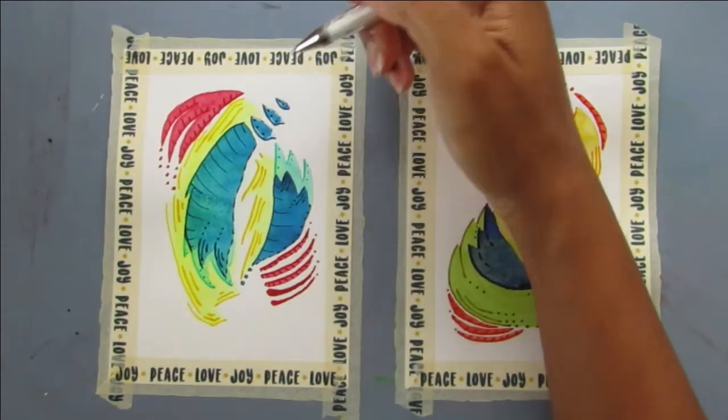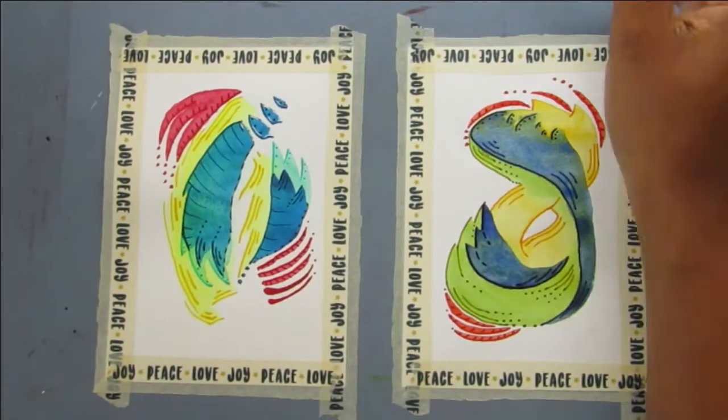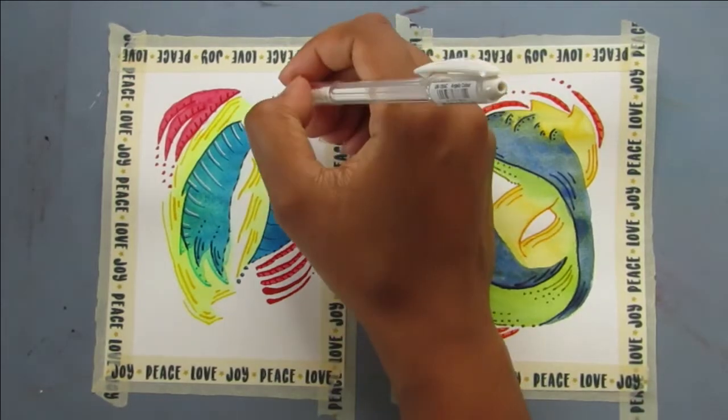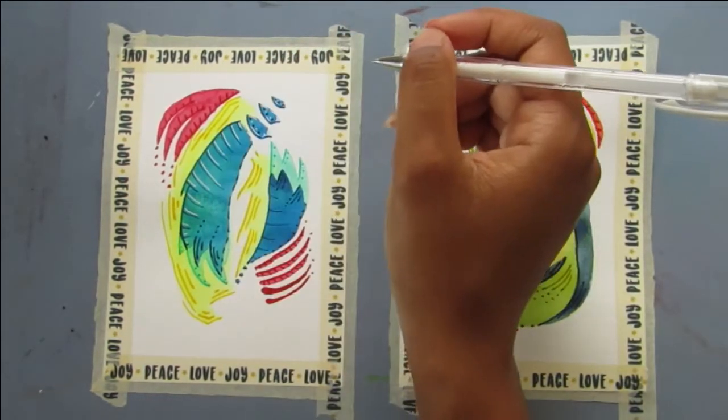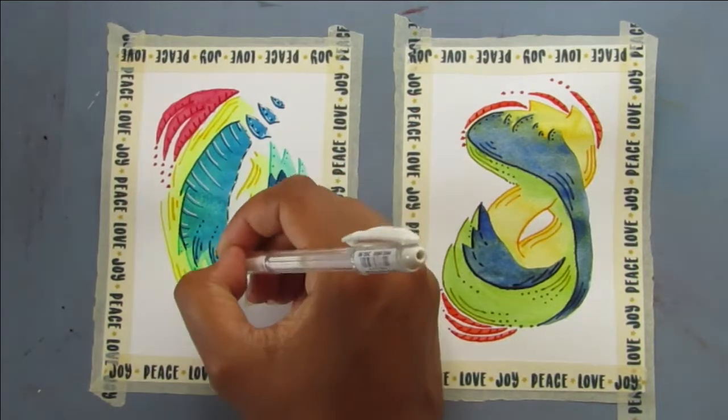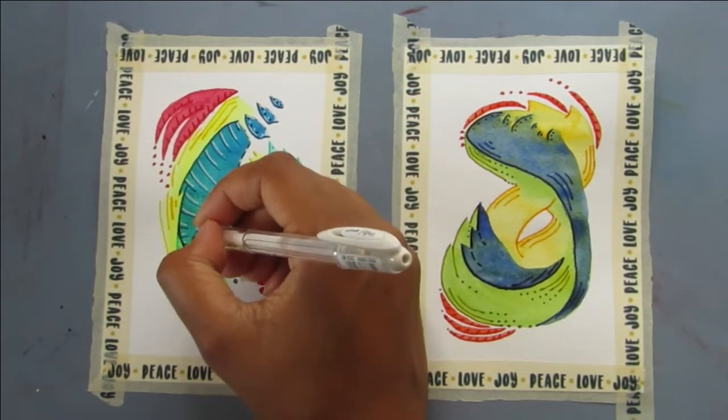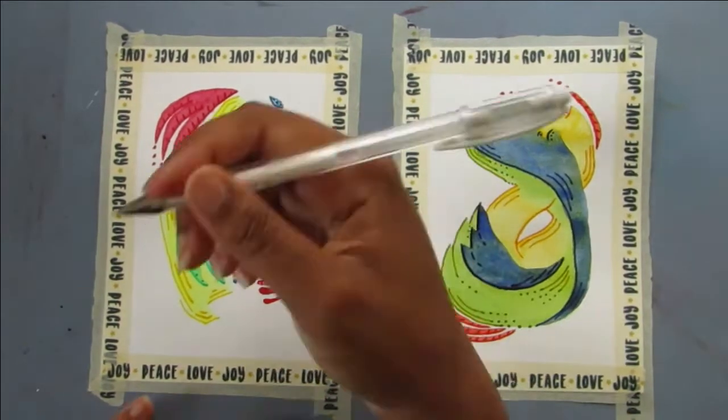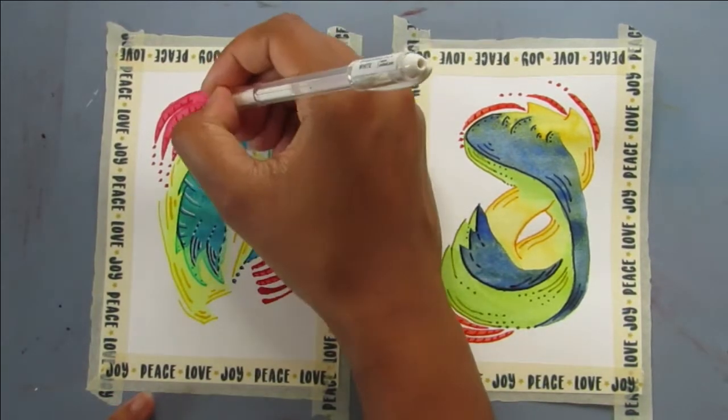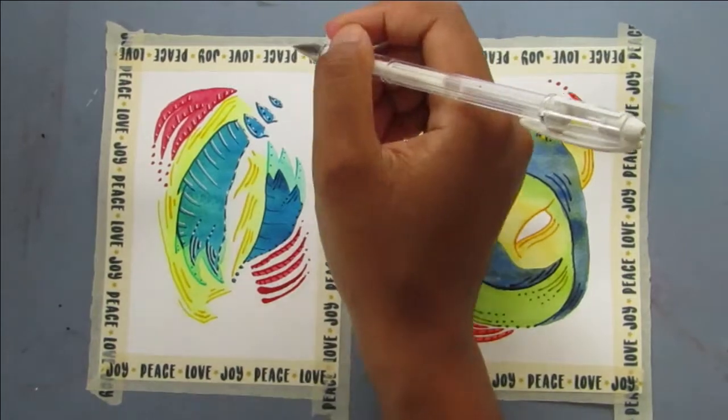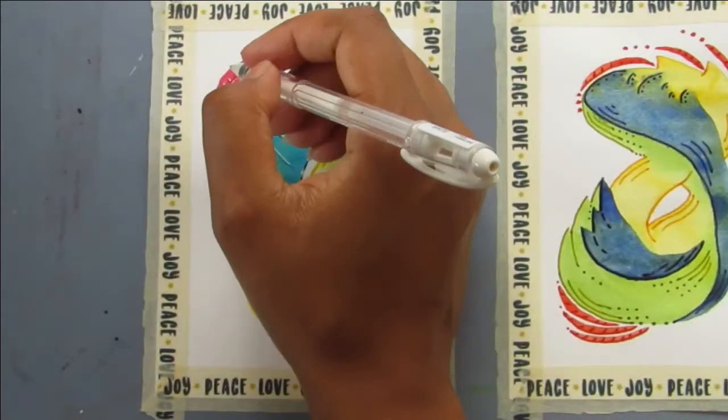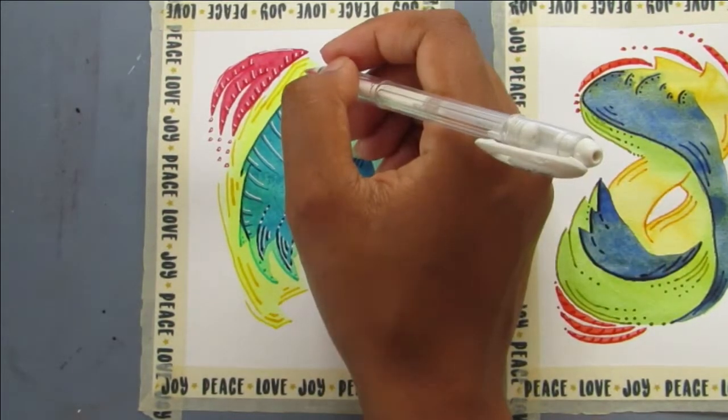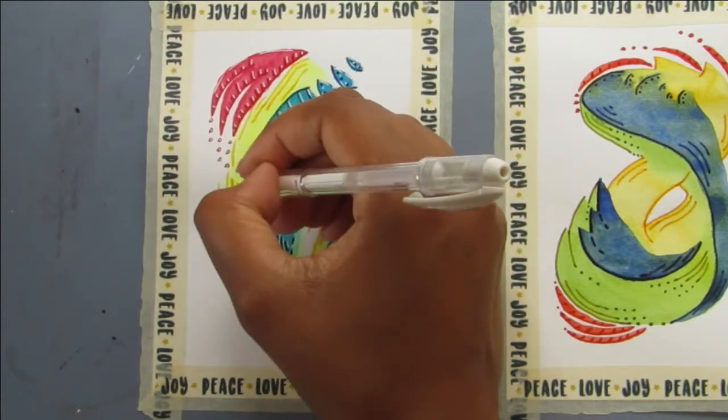Once all of that was dry, I went in with a Uniball Signal white gel pen to add some highlights and just brighten up the piece. You can see when you add the white it really brightens everything up and makes it pop a lot more. I just follow the shapes, the marks that I had made with the paint pen. Because it's abstract and not really situated anywhere, there's no point where the light's coming from, so I just used the white as just another layer of doodles and marks really.